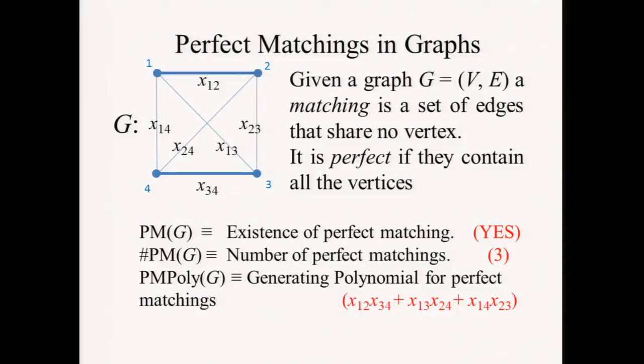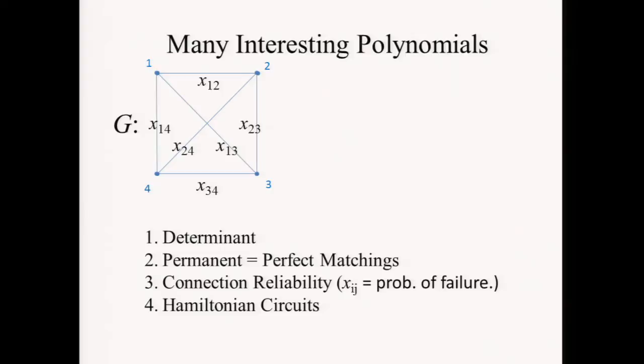As a special case, if the graph is bipartite — meaning you can split the vertices into two sets with all edges going from one set to the other — then you can give the same numbers to vertices on both sides, rename the variables, and regard the entries as entries of a matrix. This function is also known as the permanent: you multiply sets of entries, all in different rows and columns, in all possible ways. It's like the determinant except there are no signs.